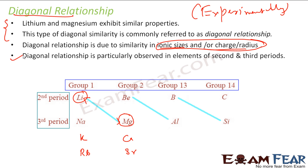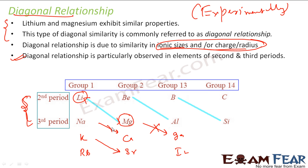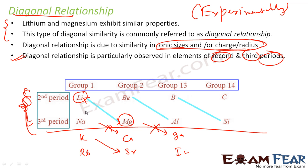Please note that the diagonal relationship is generally observed in second and third period elements only. It is not that potassium has a diagonal relation with calcium, or that magnesium will have a diagonal relation with gallium. That is not true. The diagonal relationship is specifically observed between second and third period elements only — after that it is not observed.